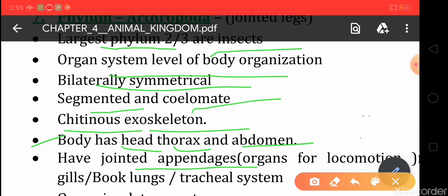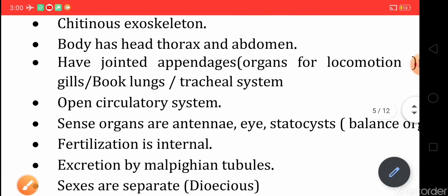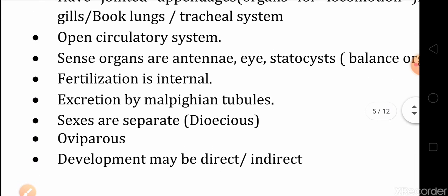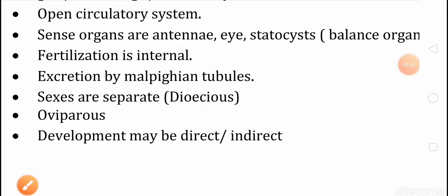For respiration they have gills, book lungs, tracheal system, or book gills — different organisms have different organs for respiration. Next, they have an open circulatory system, meaning they do not have well-developed blood vessels. The blood pumped by the heart goes directly to the tissues, which is why we say they have an open circulatory system.